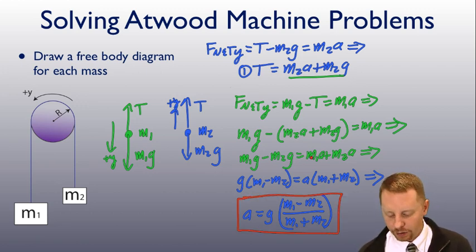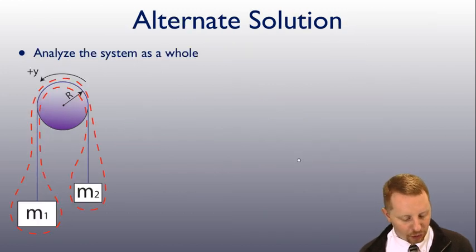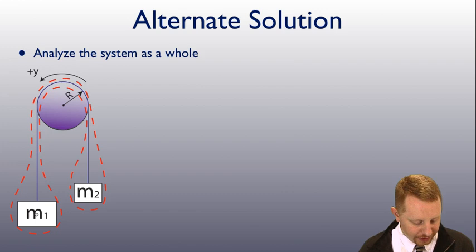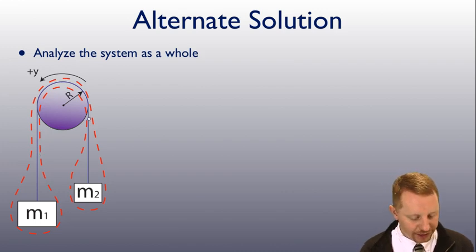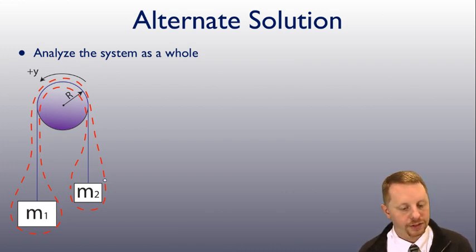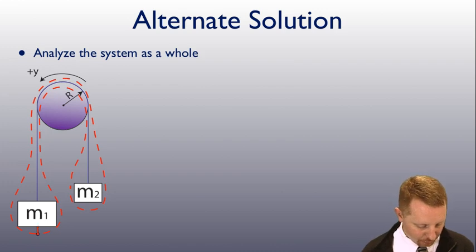There's an alternate way that we can solve these, though. Let's take a look. If I analyze the system as a whole, let's call the entire system both of these masses. We've still got our positive direction set up to the left. And what I can do is, by drawing that dashed line around the system, a closed system, because it's a closed dashed line, I can write Newton's second law directly, realizing that I have a couple forces to deal with here.